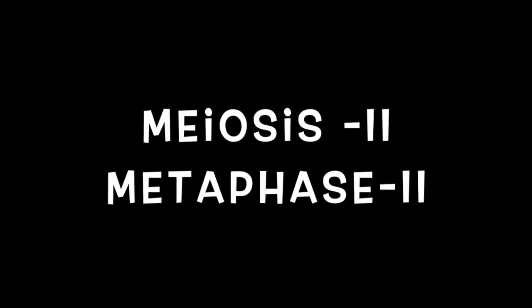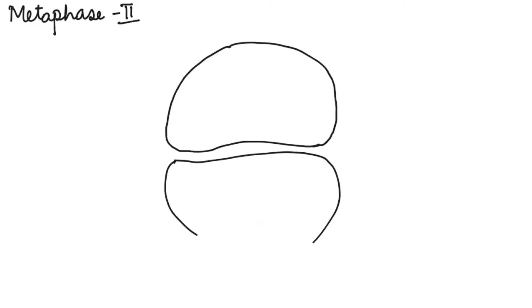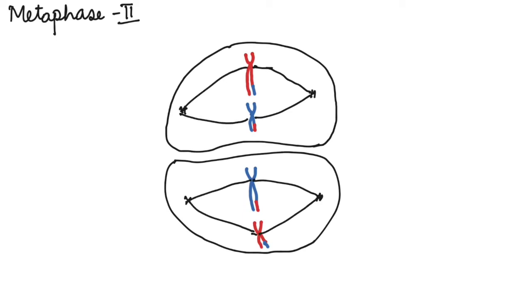Prophase 2 is followed by metaphase 2. In metaphase 2, the chromosomes now align themselves on the equatorial plate. The nuclear membrane has completely disappeared and on both the cells, the cells that were formed in meiosis 1, both the cells show the presence of the chromosomes at the center or the equatorial plate. The spindle microtubules attach to the centromere of the chromosomes on both the sides.